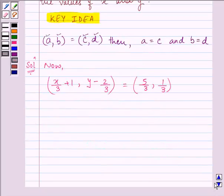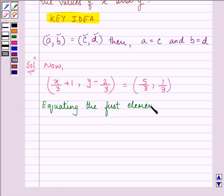Equating the first element, we get x/3 plus 1 equals 5/3.